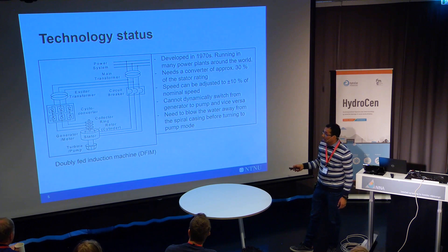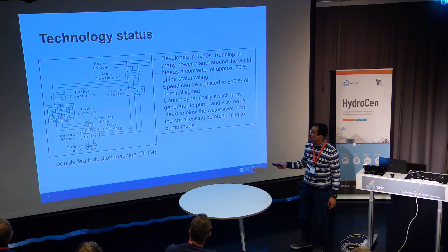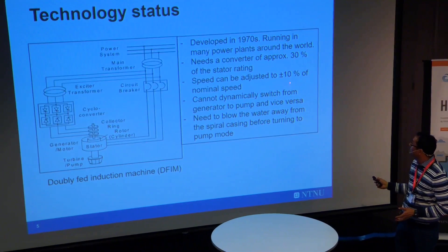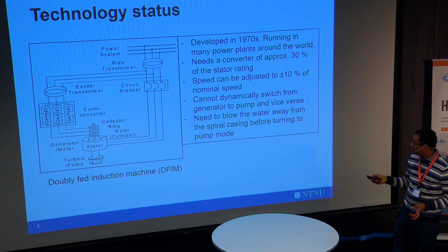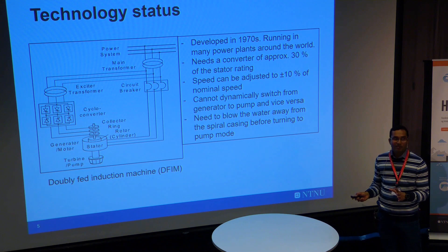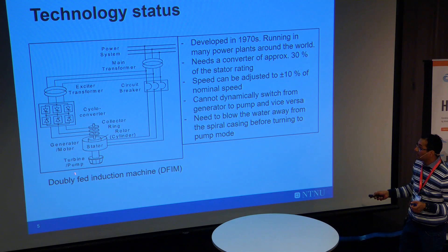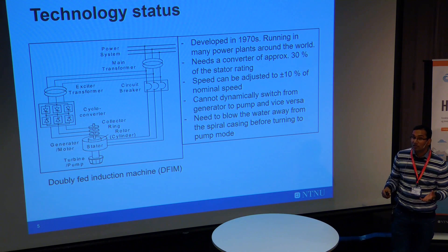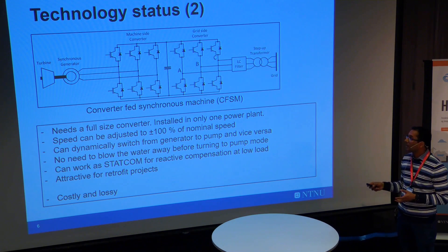This type of machine is being used to vary the speed today. As Arne was explaining, we feed power through the rotor, and we need only a very small converter — only 30% of the size — to adjust the speed by about 10% of nominal speed, which is good enough for the range of variable speed operation. But this technology has a known disadvantage: we cannot change from generation mode to pumping mode dynamically. We need to blow the water away from the spiral casing before switching modes, so we have to wait maybe 5–10 minutes.